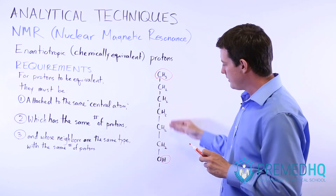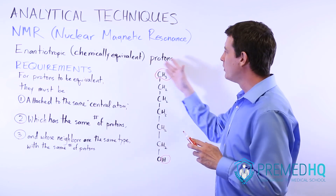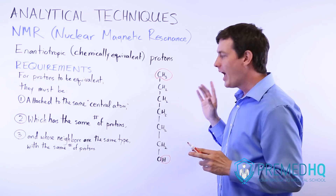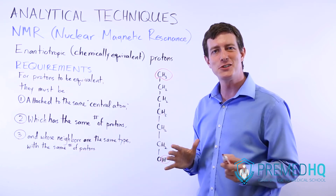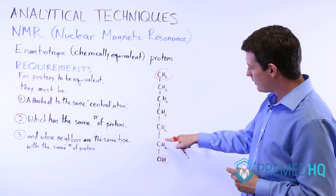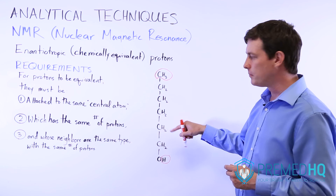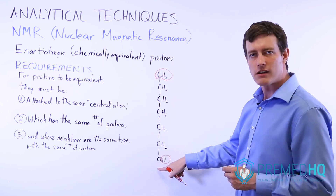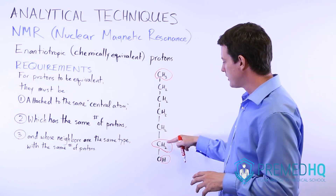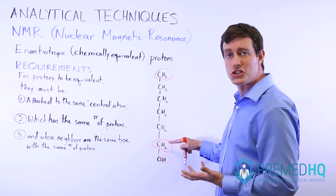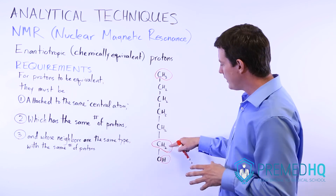The next thing we look for are protons attached to the same type of central atom with the same number of protons. The three hydrogens on the terminal CH3 are attached to a carbon containing three hydrogens — that's different from all the remaining CH2 groups, giving us a second unique hydrogen environment. The remaining CH2 groups satisfy the first two criteria, but we also need to check neighbors. The CH2 group adjacent to oxygen has one CH2 neighbor and one oxygen neighbor — that's the only CH2 with an oxygen neighbor — establishing a third distinct proton environment.